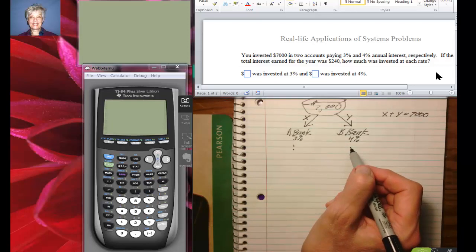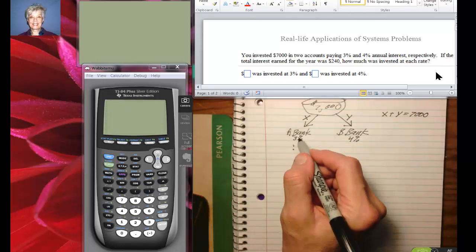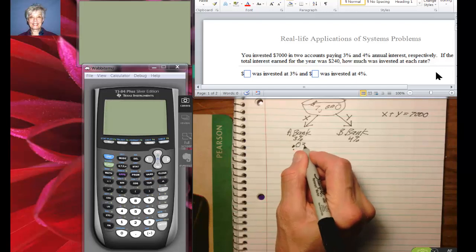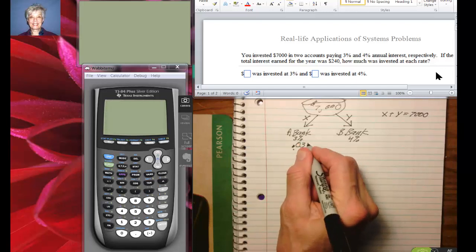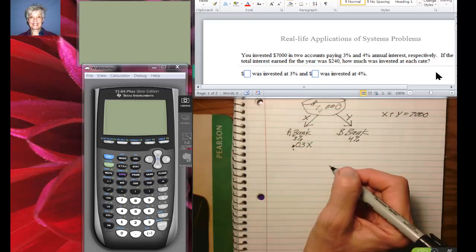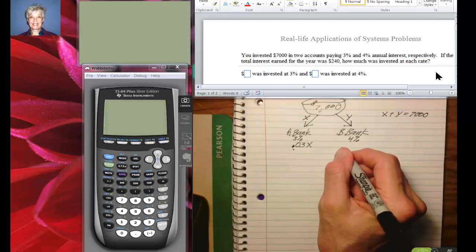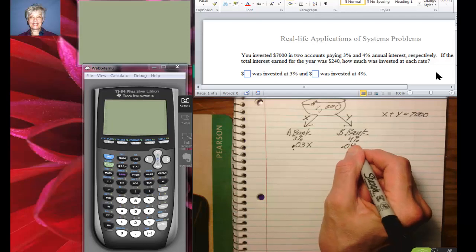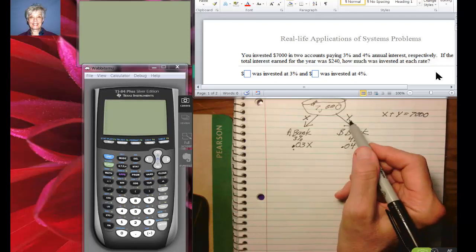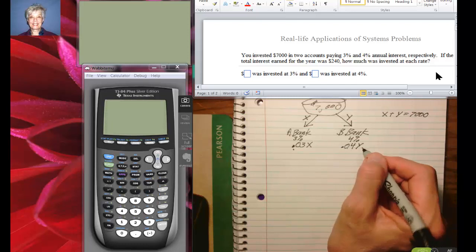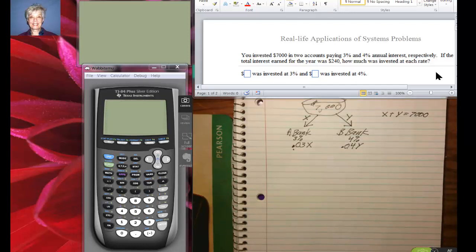So Bank A is going to pay you 3% as a decimal, 3% of this X dollars, and Bank B is going to pay you 4% as a decimal on your Y dollars. So 4% of the Y dollars is going to be a little extra treat, maybe for Christmas or something like that or maybe somebody's birthday.